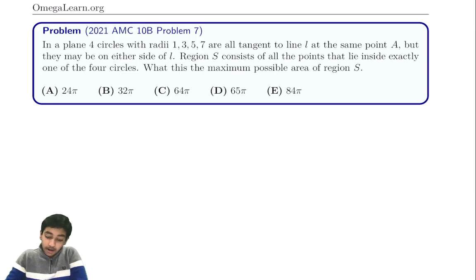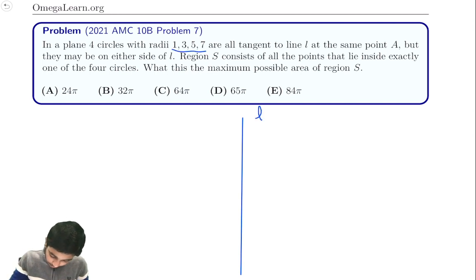So today we're going to be taking a look at this problem, 2021 AMC 10B number 7. We've got this line here in the middle, and then we've basically got four circles of radii 1, 3, 5, and 7 that are tangent to this point A.